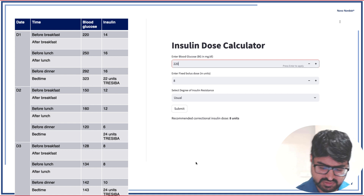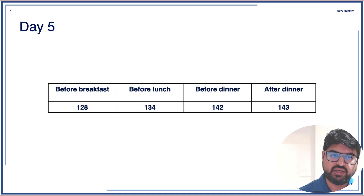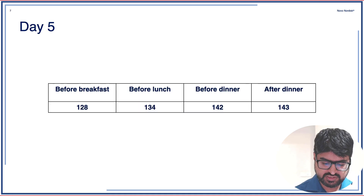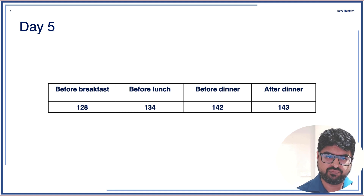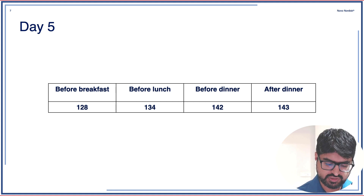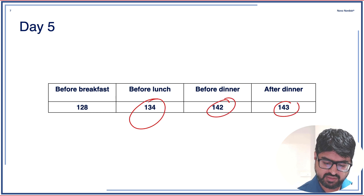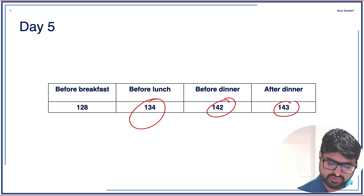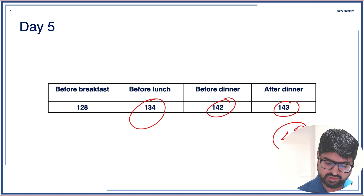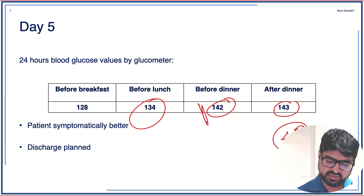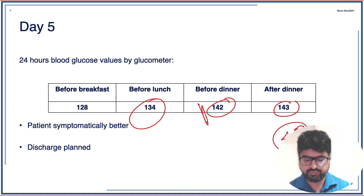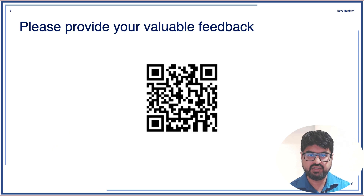This is how you typically manage a patient in a hospital setting. By day five, the outcomes were: pre-breakfast 120, pre-lunch 130 — slightly higher but acceptable — and post-dinner was less than 180, which is well under control. One reading was slightly elevated but otherwise the patient was symptomatically better.